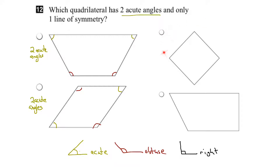Let's try the next one. All these angles are the same and they are all 90 degrees. So these are all right angles, and therefore there are no acute angles here, so this one is not a possibility for the answer.